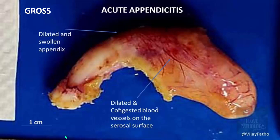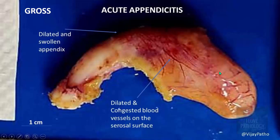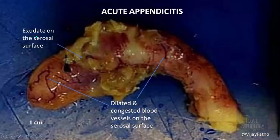Grossly, the appendix will be dilated and swollen. Dilated and congested blood vessels can be found on the serosal surface. The normal shiny surface of the appendix is lost in appendicitis; the surface becomes dull due to covering by exudate. You can find exudate on the serosal surface, and the dilated congested blood vessels indicate that an acute inflammatory process is ongoing.